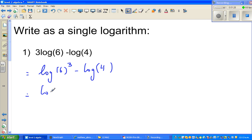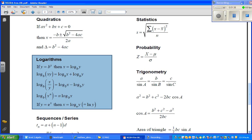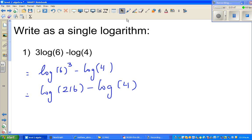So this is nothing but log of 6 cube. You can use your calculator, it's 216 minus log of 4. When you are taking away log, again you can use this rule backwards. Log of x minus log of y is log of x divided by y. So applying that rule, this is log of 216 divided by 4.